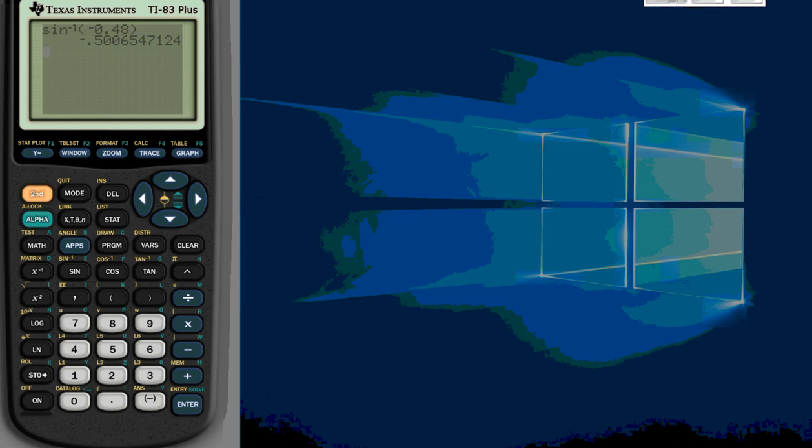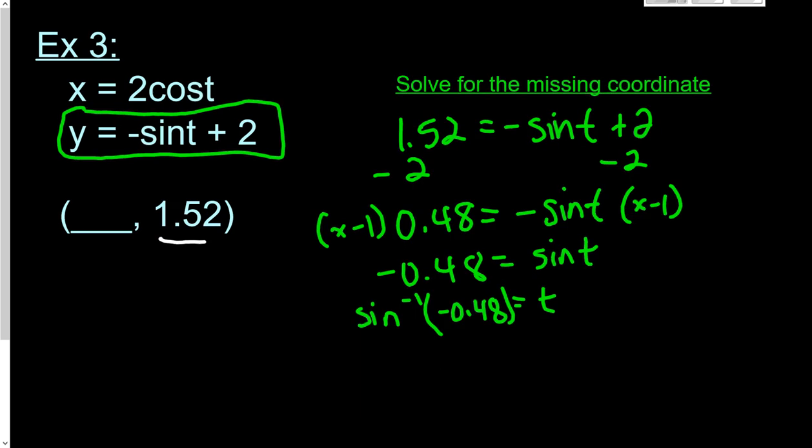Okay. So let's head back to the work we were doing. That means when t equals negative 0.5, that's when the parametric equation will give us 1.52 for the y value.